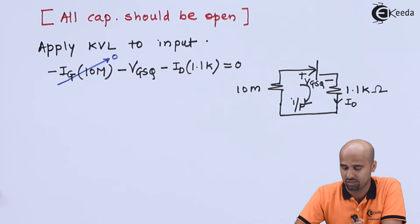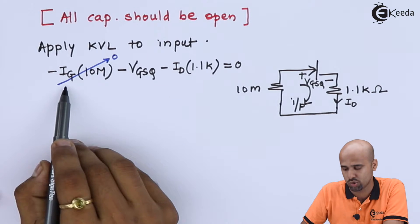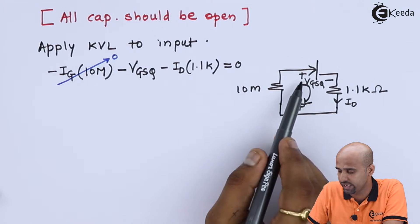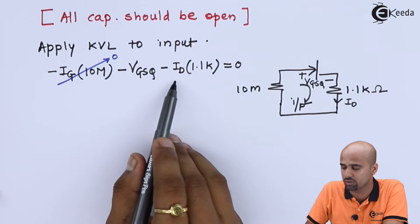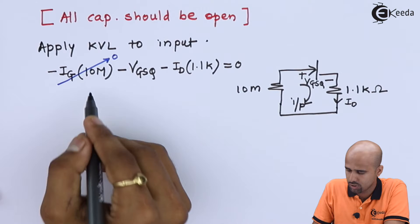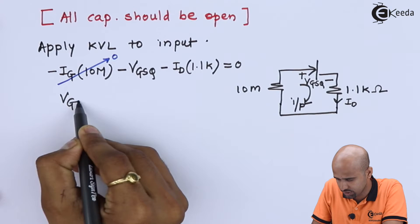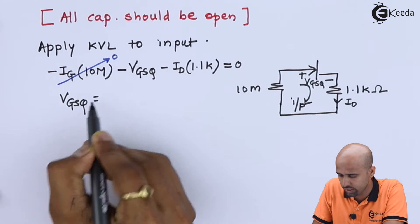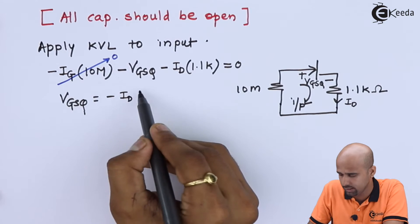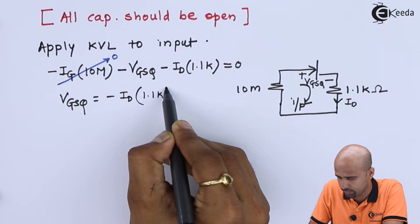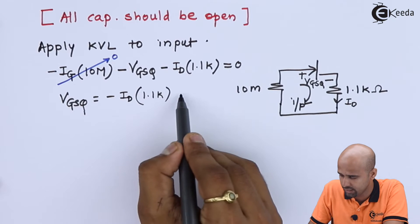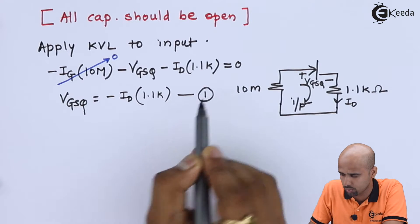So voltage across that particular resistance will be 0. I will be getting VGSQ is equal to minus of ID into 1.1k, and that is nothing but the function of ID. So we will write here VGSQ is equal to minus of ID into 1.1k or else otherwise 1100 multiplied by ID. We will write this as equation number 1.